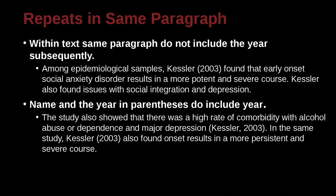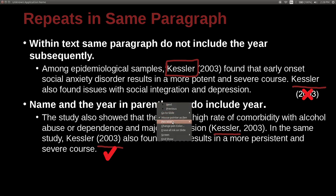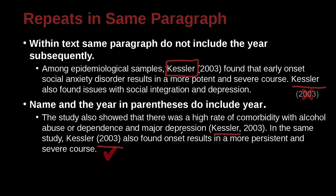Again, very quickly: if you have the same paper cited twice, and the first time the name of the author is outside the parentheses, then the next time you do not need a date. However, if the first time is inside the parentheses, the second time you do need to repeat the date — regardless of whether the second citation is inside or outside parentheses.